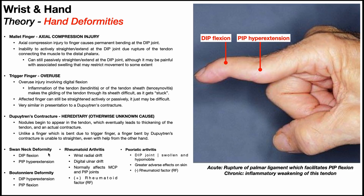The swan neck deformity is caused by damage to the palmar ligament, which facilitates PIP flexion at the proximal interphalangeal joint. If you damage that ligament, you're not going to have flexion at the PIP joint — you're going to have hyperextension at the PIP joint — and then also a compensatory flexion at the DIP joint. So DIP flexion combined with PIP hyperextension is characteristic of a swan neck deformity.